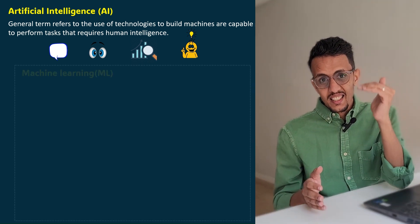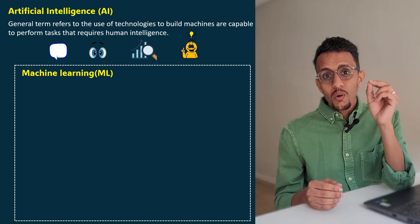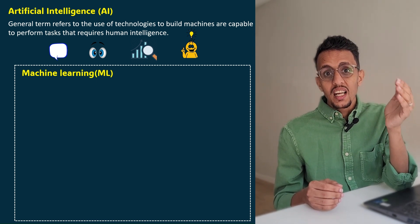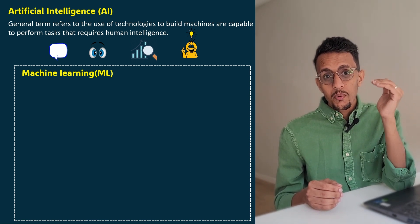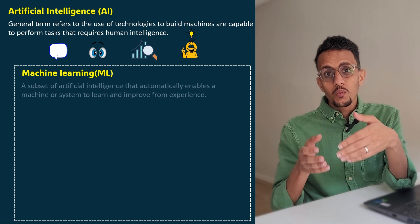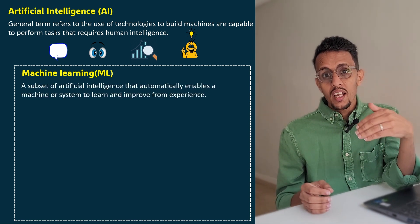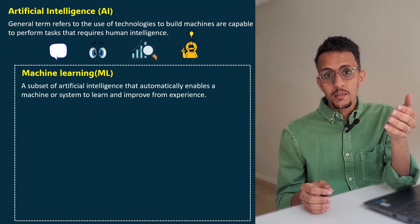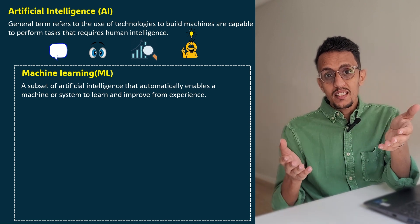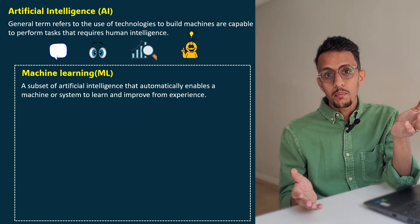Machine learning, on the other hand, is a subset of AI, and it is more of a method than a term. It refers to the process of teaching the machines with data so that the machines can learn and improve from experience to perform complex tasks without being explicitly programmed.